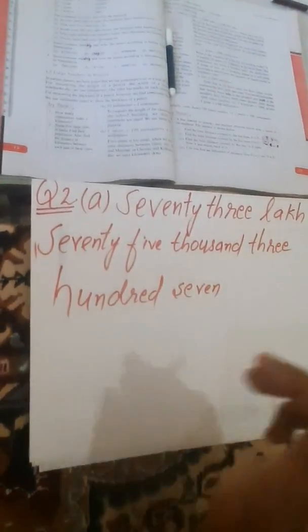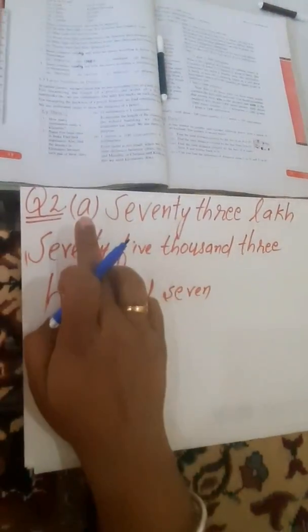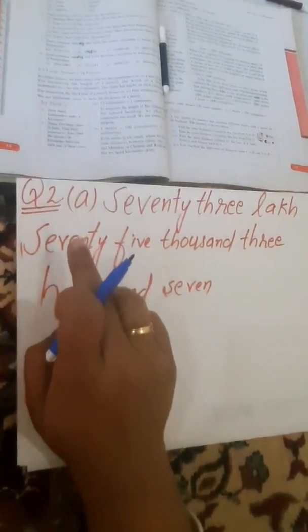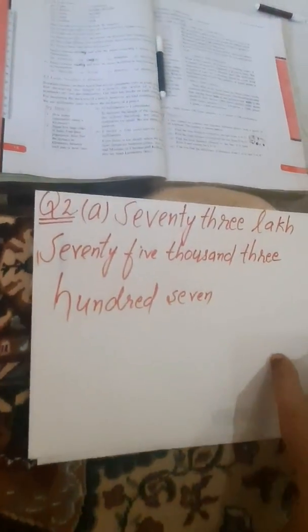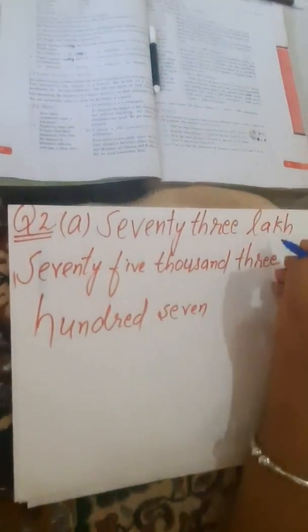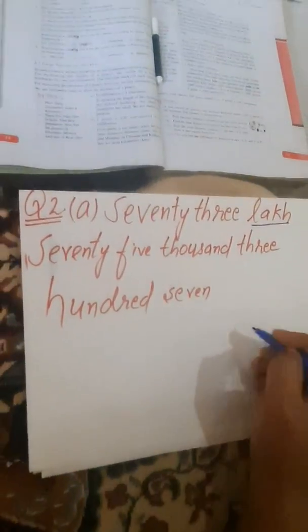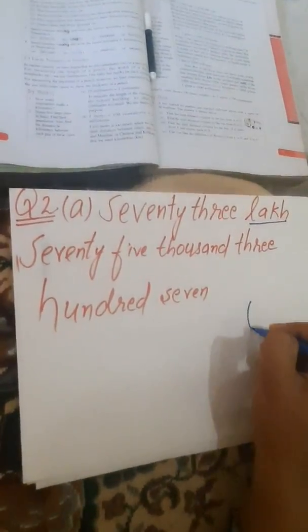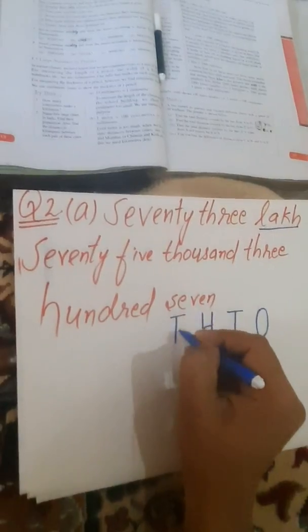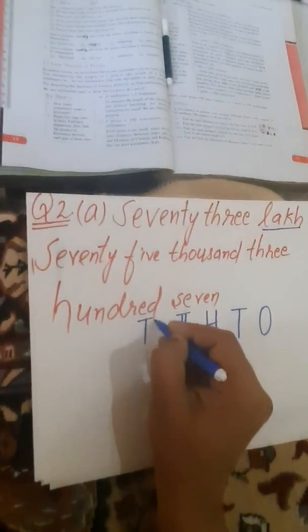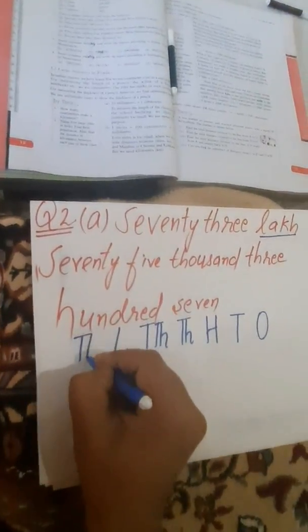Question number 2: place commas correctly and write the numerals. This is the A part of the question. I have to write this in numerals. The highest greatest period is lakh, so I will write all the periods till lakh. Starting from ones, tens, hundreds, thousands, ten thousands, lakh, ten lakh.